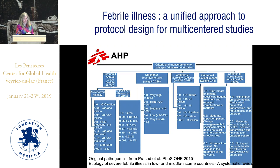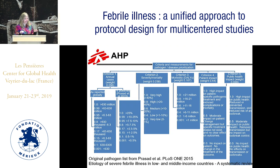Briefly, how the analytical hierarchy process works: based on your intended use, you decide what criteria to include. We chose annual cases, severity, mortality, morbidity, patient impact, and public health impact. Then through an expert consensus process, you can weight those criteria — you might feel that annual cases are more important than mortality, or vice versa.